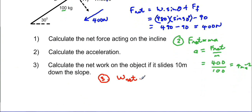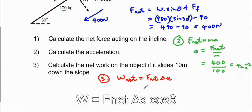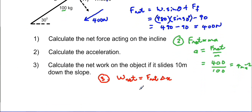Then we say work net is equals to F net delta X cos theta. F net we worked out is 400 newtons, and the delta X, the distance that it moves, is 10 meters.